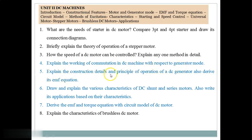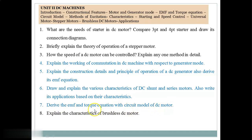Question 5: Explain the constructional details and principle of operation of a DC generator, and also derive the EMF equation. Question 6: Draw and explain various characteristics of DC shunt and series motors, and write their applications based on characteristics — electrical and mechanical characteristics. Question 7: Derive the EMF and torque equation with the circuit model of a DC motor — note that back EMF equation is asked for DC motor. Question 8: Explain the characteristics of a brushless DC motor. These are the important questions from Unit 2.